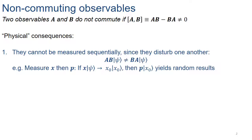If we consider two famous non-commuting observables, namely position and momentum, then if we try to make a precise position measurement of a state psi, that measurement collapses the state to one of the eigenstates of the position operator x0. If we then try to make subsequent momentum measurements, we'll just get random results because we're measuring the position eigenstate.